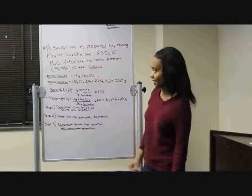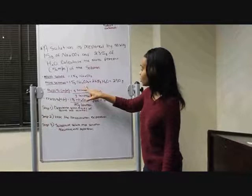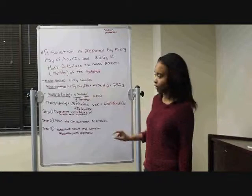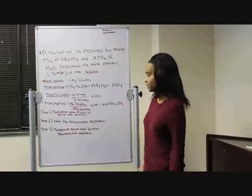To calculate the mass percent, you divide the mass of the solute by the total mass. The total mass of the solution is 15 grams plus 235 grams, which equals 250 grams.